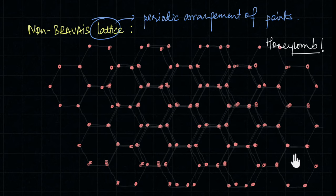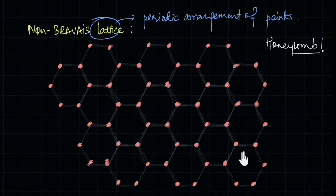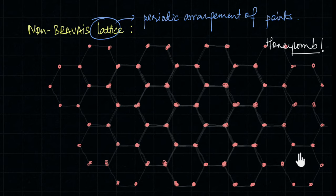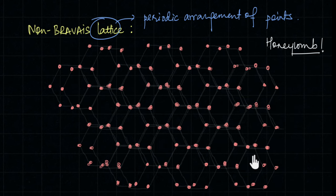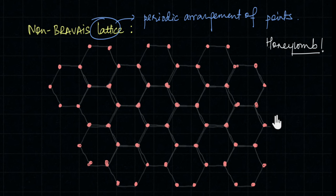However, if we move further, the points do line up — so there is definite periodicity, making it a lattice. As established, any repeating pattern can always be converted into a Bravais lattice. For the honeycomb, one way is to consider two atoms as the basis and replace them with a single lattice point. Placing these lattice points throughout the crystal yields a lattice that is translationally symmetric at every lattice point — a Bravais lattice.